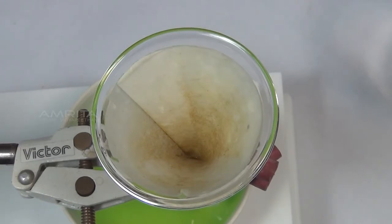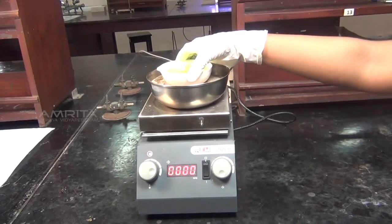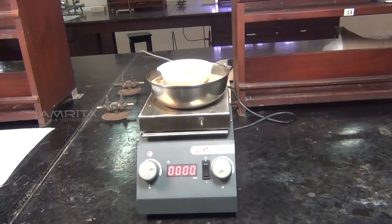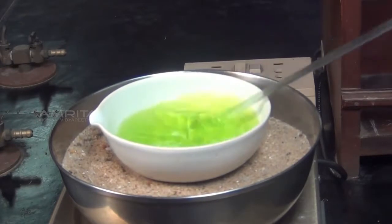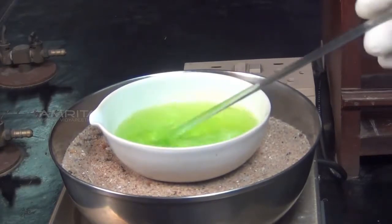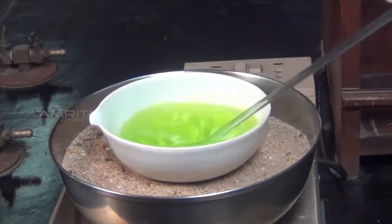After filtration, the insoluble impurities are left behind on the filter paper. Heat the solution in the china dish over the sand bath. To avoid crust formation on the side of the dish, stir the solution continuously with a glass rod.